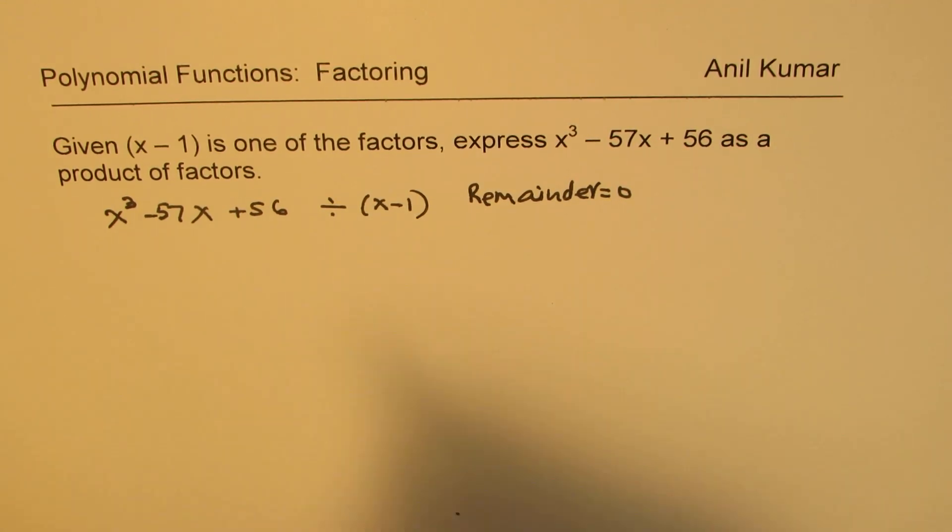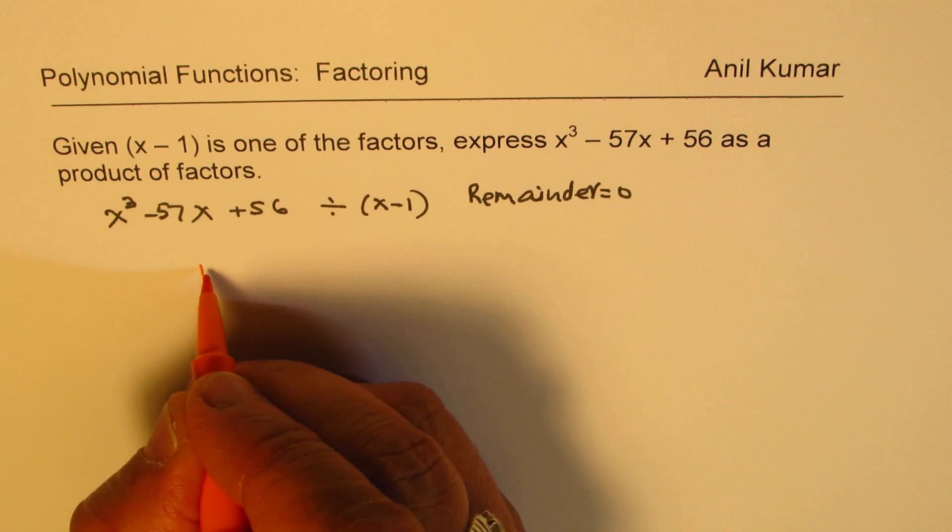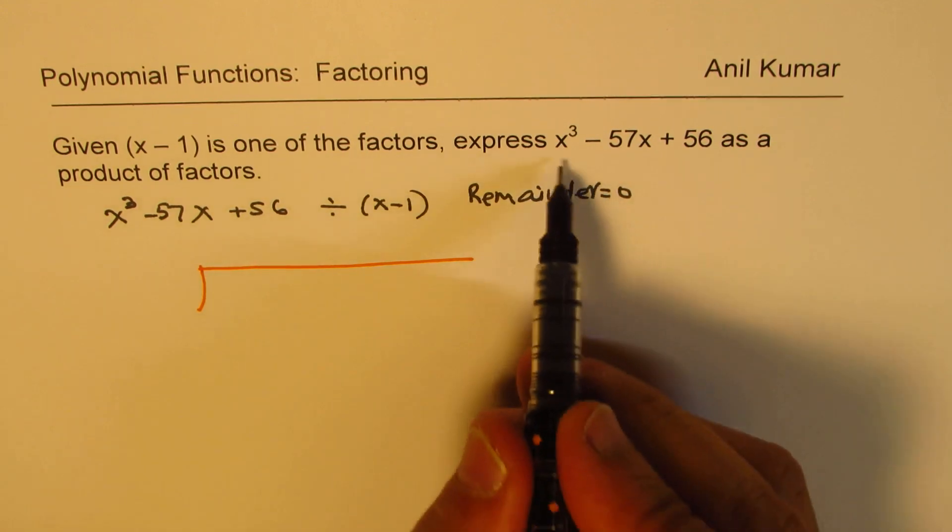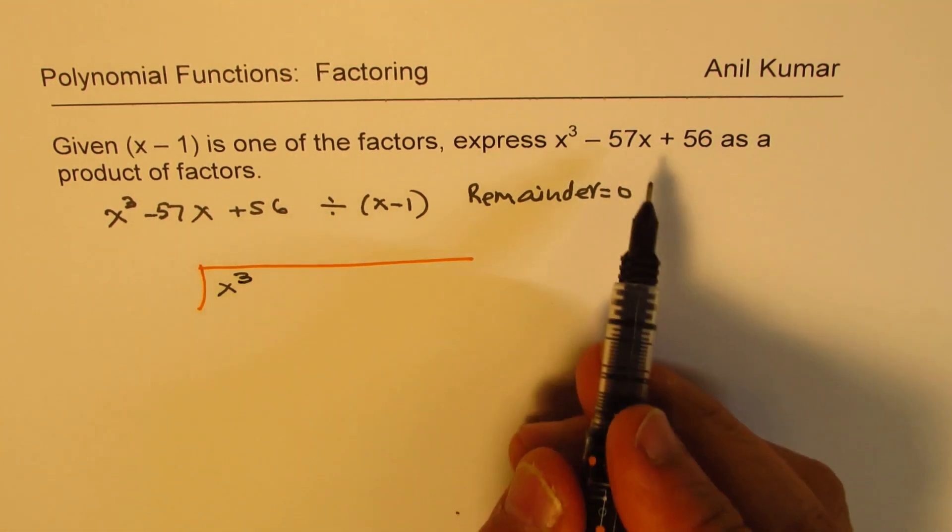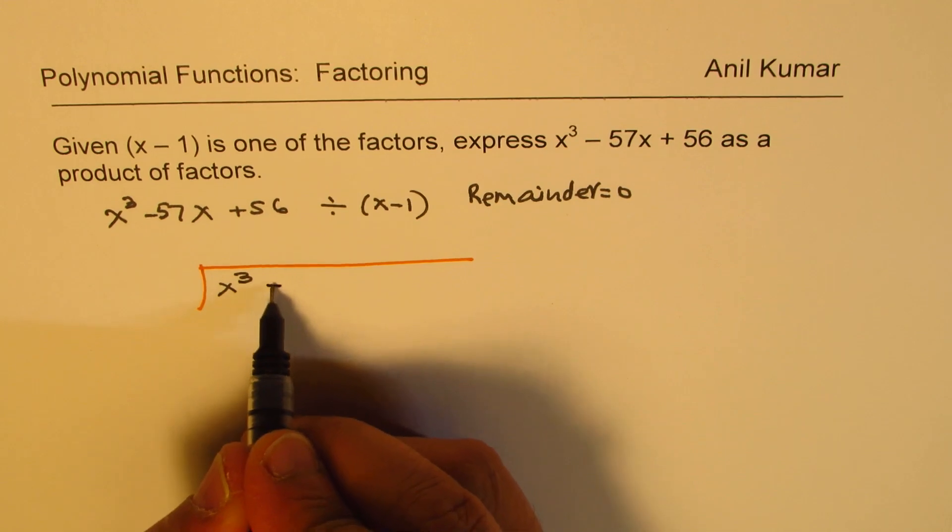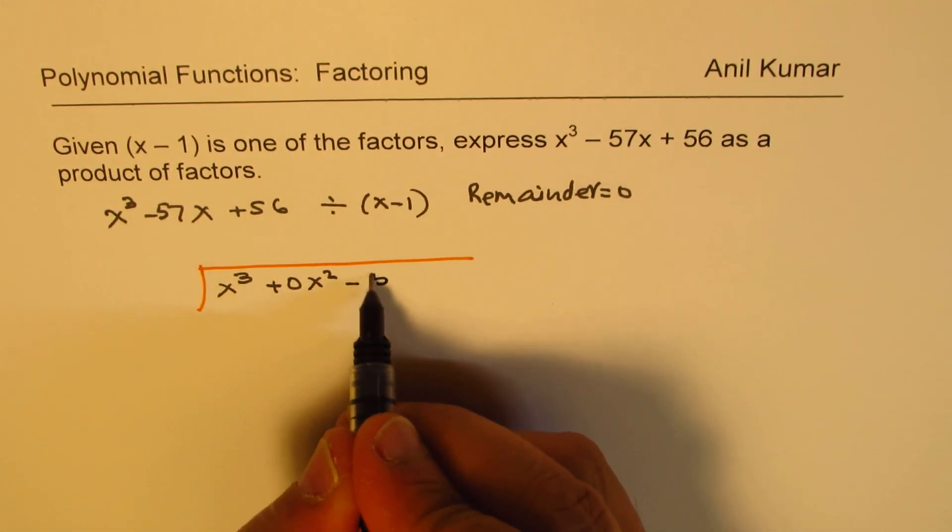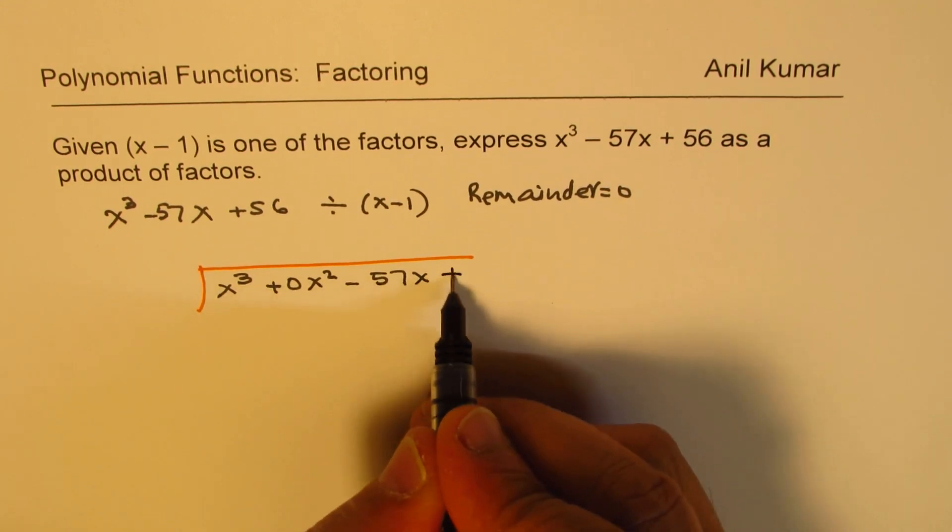So let's divide. We are going to divide x cubed. Now you will see that x squared term is missing. So we'll write a placeholder, 0x squared, minus 57x plus 56.